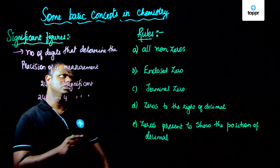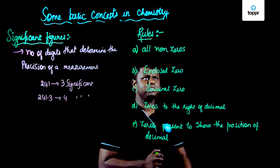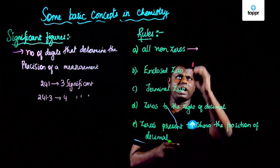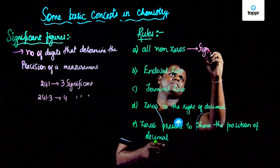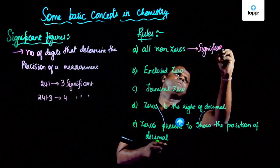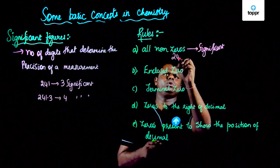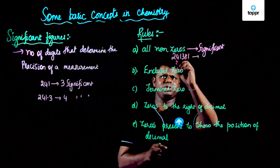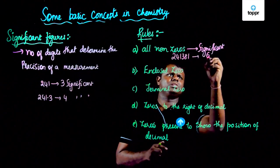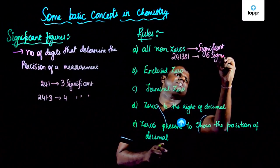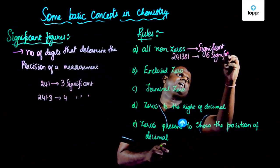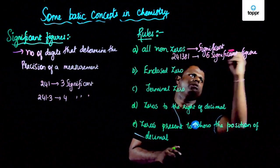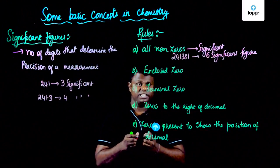There are certain rules for determination of significant figures. The first rule is: all non-zeros are significant. For example, if I have something like 2, 4, 1, 3, 8, 1 — you can see all are non-zeros, so you have 1, 2, 3, 4, 5, 6. This is basically six significant figures.